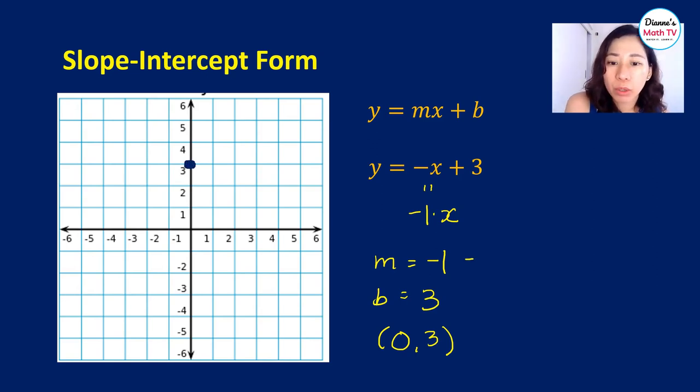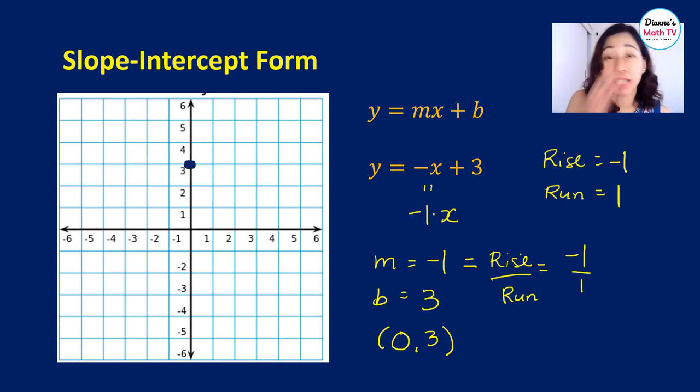Now since we have our slope to be equal to negative 1, let us recall that the slope is equal to rise over run. So we can view negative 1 as negative 1 over 1. So what does that mean? We will look at the rise as negative 1 and the run is equal to 1. We have a video lesson on slopes regarding this. So if you want to review that, you can watch that video by simply clicking the card above. What is the meaning of rise equal to negative 1? This means that you go down by 1 unit and since our run is positive, that means you go to the right by 1 unit.